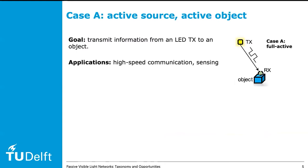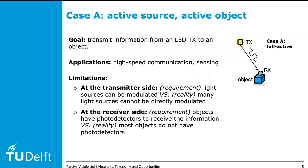Case A is the most popular one. The goal in Case A is to transmit information from an LED to an object. This goal is simple to achieve because the light source can be modulated and the object can decode data reliably, thanks to having a photo detector aligned towards the source. This type of visible light network has enabled exciting applications such as indoor localization and high-speed internet. However, these applications assume two key requirements: light sources can be modulated to transmit information, and objects have photo detectors to receive that information. These requirements limit how visible light can be exploited for sensing and communication.